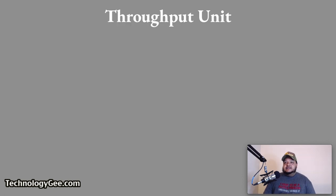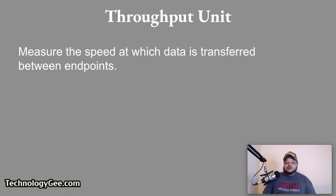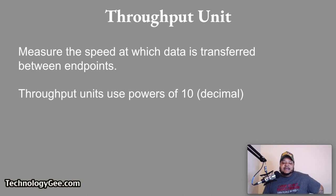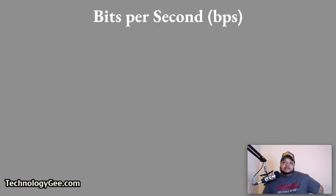Throughput units are used to measure the speed at which data is transferred between endpoints, such as from the internet to a broadband modem or from a hard drive to a computer. Throughput units use powers of 10 numbering systems. Let's talk about some of these throughput units, starting with bits per second.